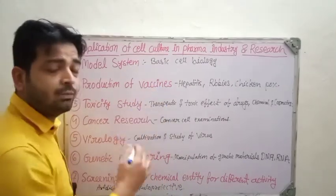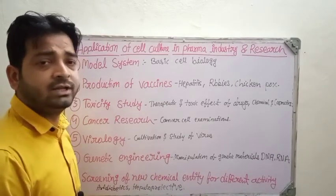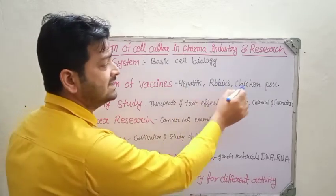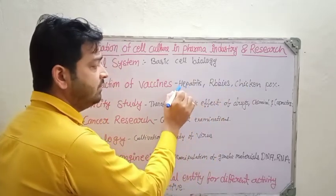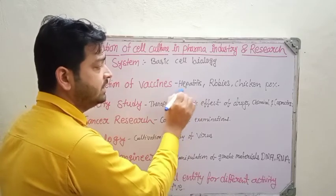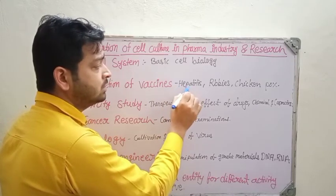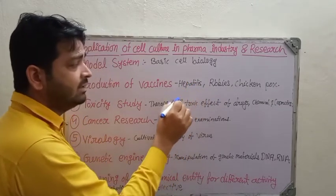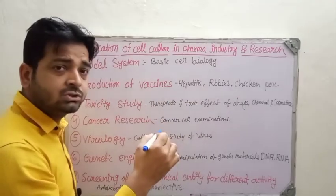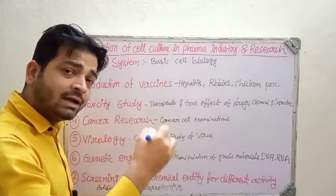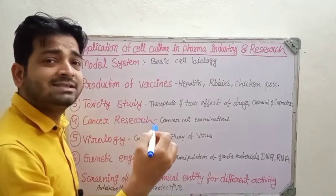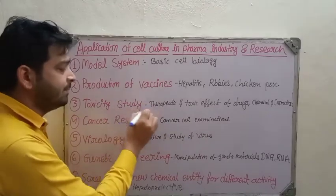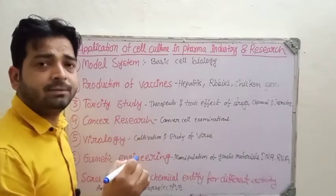The second application is the production of vaccines. We are going through a vaccine era right now. We need to produce vaccines — for example, for hepatitis, rabies, and chickenpox. When we culture cells in the laboratory, we can understand the anatomy and physiology of viruses like the hepatitis virus or rabies virus, and accordingly go for vaccine production. The same thing is happening in the case of COVID-19.